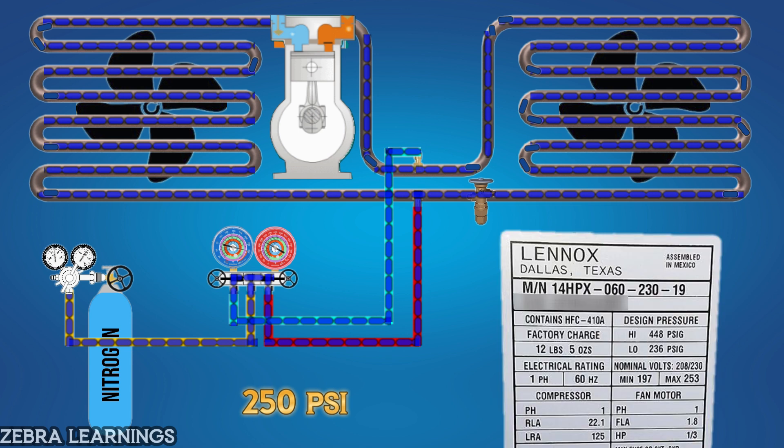Each AC unit has a maximum pressure capacity that must be observed during nitrogen leak testing. Exceeding this pressure can lead to damage to the unit's seals, gaskets, or other components, potentially causing new leaks or even equipment failure. Therefore, it's crucial to determine the appropriate pressure for nitrogen charging and adhere to that limit.